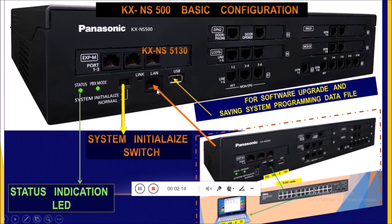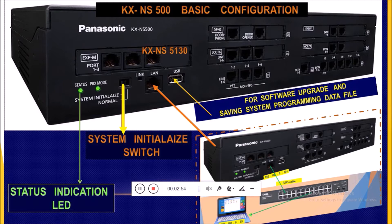The second connection we can find is the LAN port, which can be used to set our system as a server in the local LAN of the customer. The second connector is a USB connector port or connection jack, which can be used to save all programming data and activation files, recorded messages, or uploaded messages for the system. It will also be used if you want to upgrade your system.